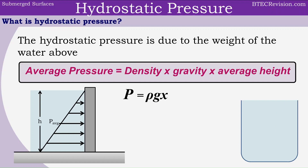Next, we can look at calculating the average pressure. From the equation before, we worked out the pressure at any point. The average pressure exerted is equal to the density times gravity times the average height. At the top there's no weight because there's no water from above, so the pressure at the top is going to be zero. At the bottom, pressure is going to be maximum. So if we add up the pressures and divide by two, we get the average pressure. Since p-naught is zero, we can write: average pressure equals maximum pressure divided by two.